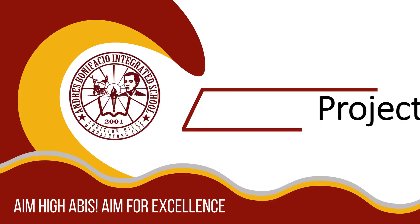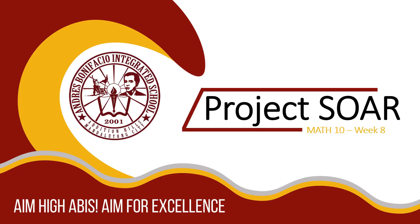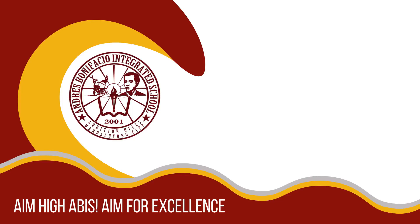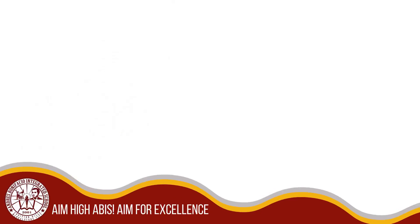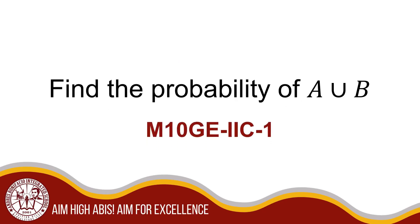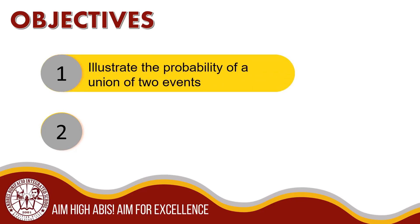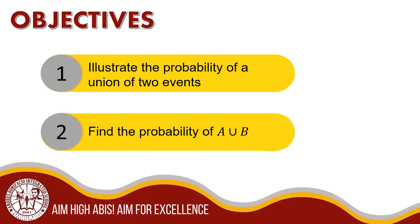A pleasant morning, parents, teachers, and learners. Welcome to our Project SOAR — Series of Online Academic Review of Mathematics Learning Modules. I am Nora M. Ramirez, a teacher from Andres Bonifacio Integrated School, and I will be your reviewer for Week 8 of Grade 10 Mathematics. My topic is about finding the probability of the union between two events. Our objectives: number 1, illustrate the probability of a union of two events; and number 2, find the probability of A union B.